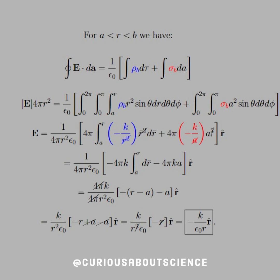For R between A and B, we have the surface integral equaling 1 over epsilon naught times the Q enclosed, where Q enclosed has to include both the volume bound charge and the surface bound charge. For the surface bound charge, we only need it for R equals A because our Gaussian surface is between A and B, so it does not include B. We carry through the calculus — the R's cancel in the volume and the radius A cancels within the surface — leaving a straightforward algebraic expression. We find that the field is equal to negative K over epsilon naught R in the R-hat direction.